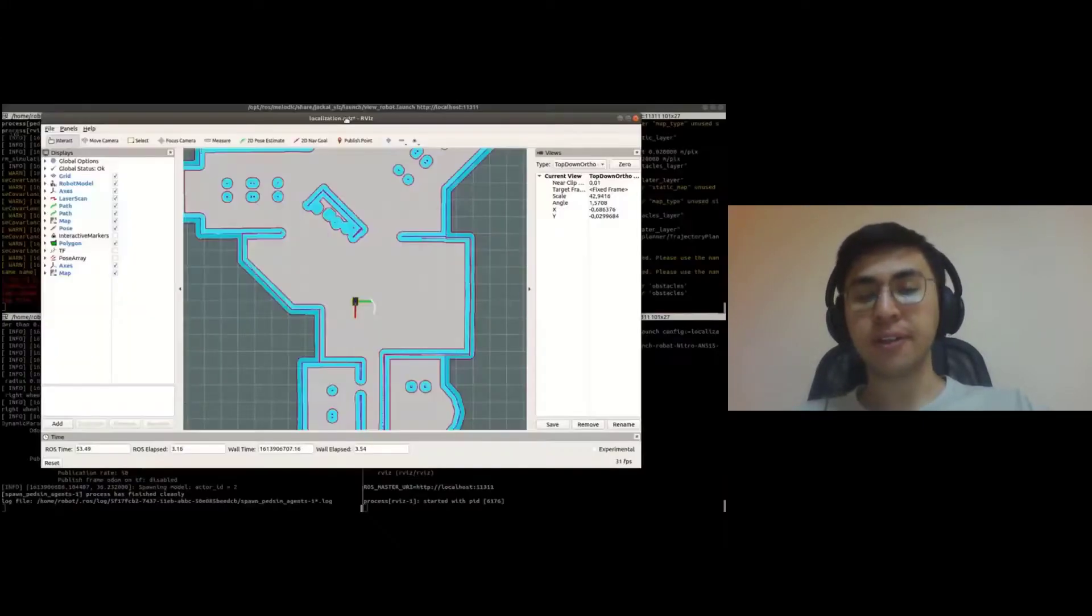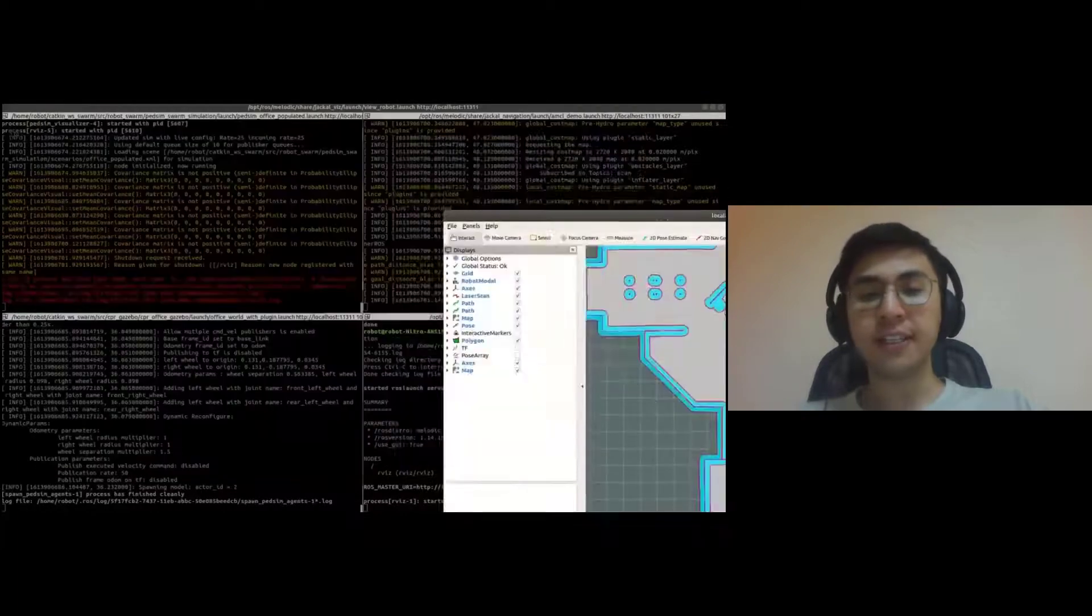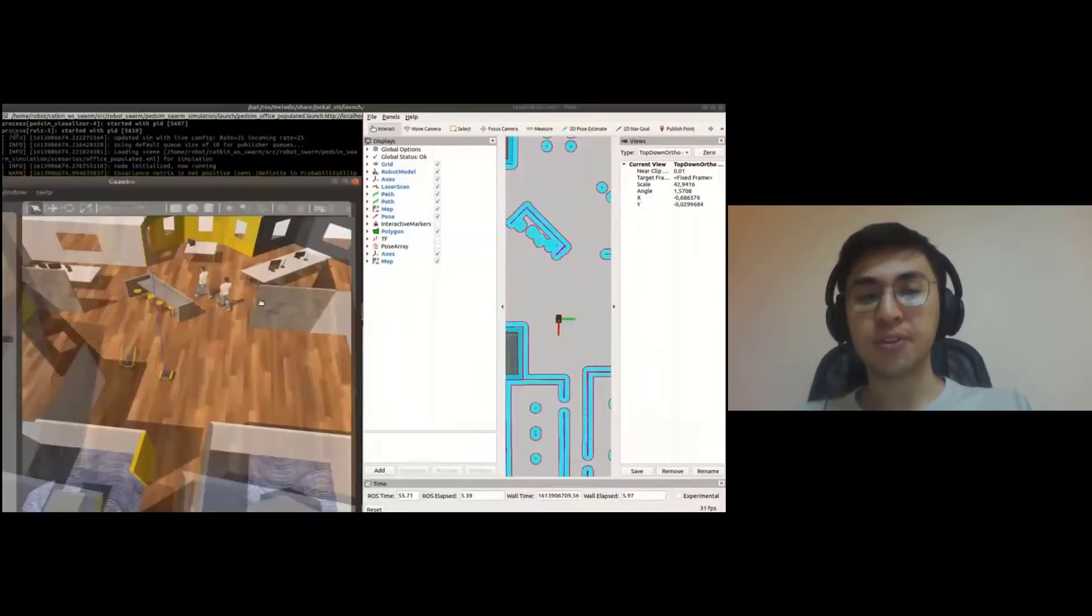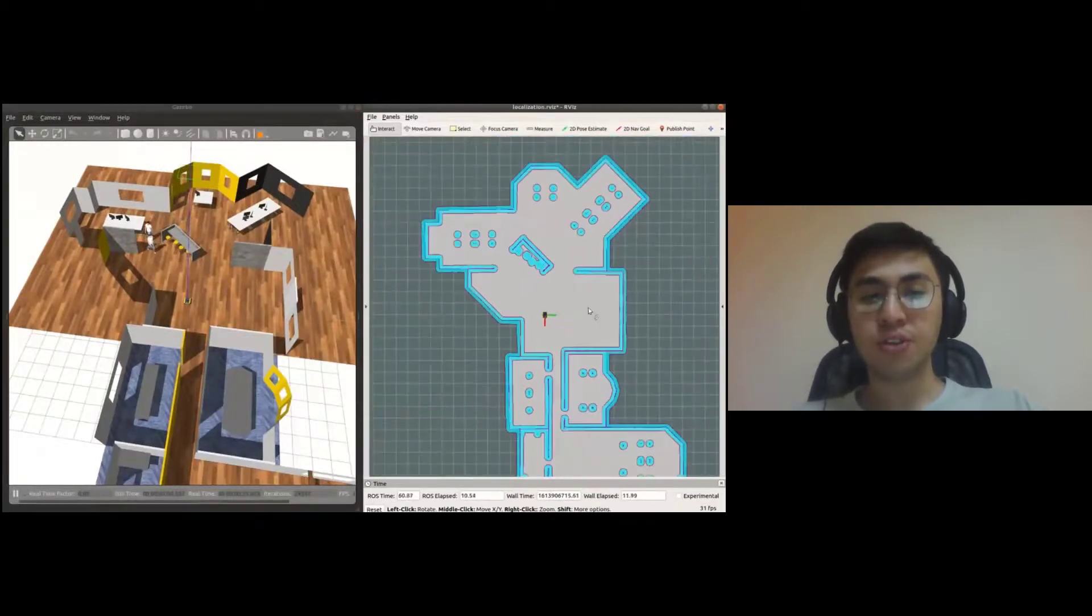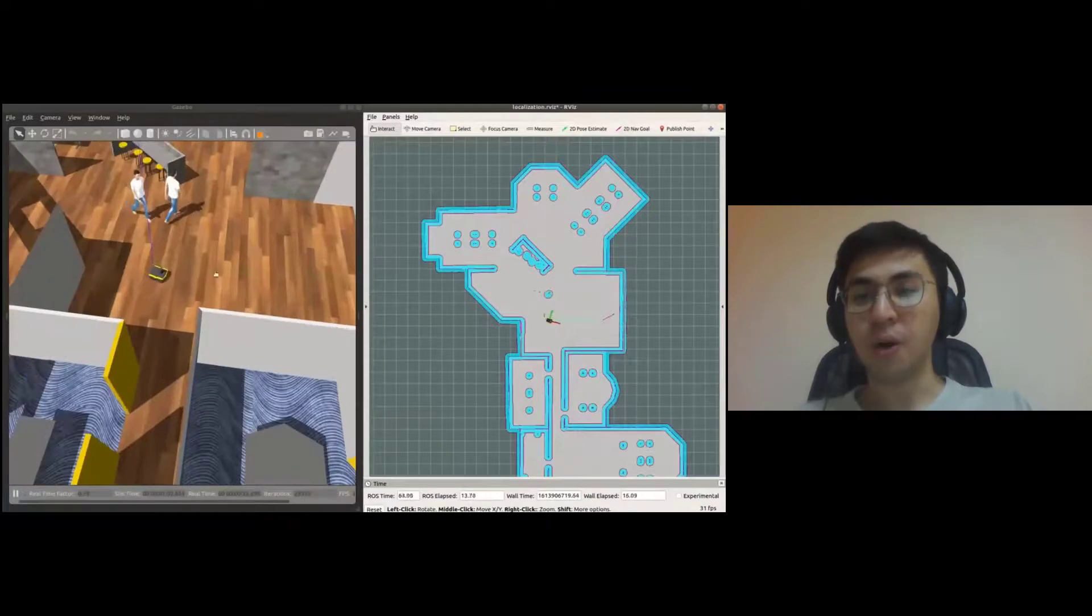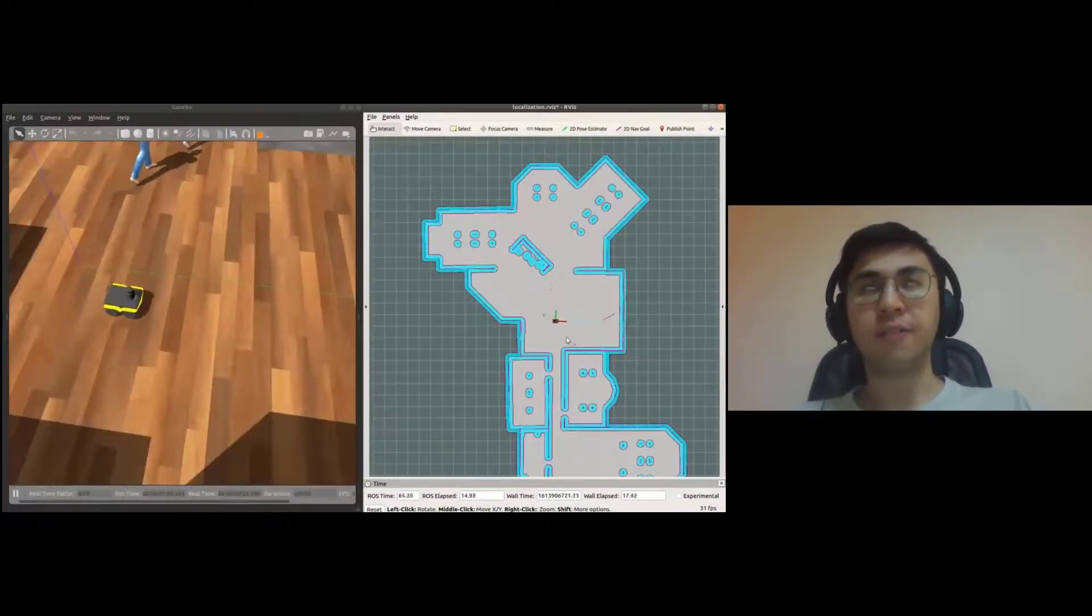As a result, we present a robot navigating in our custom Gazebo scenario with multiple spawned people. And as it can be seen from the video, the robot is able to navigate in an indoor environment, while also avoiding pedestrians in a social manner.